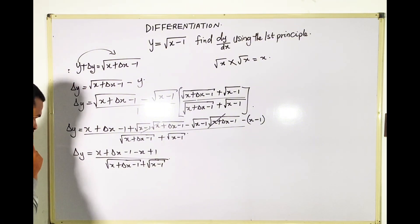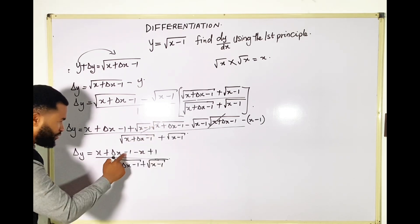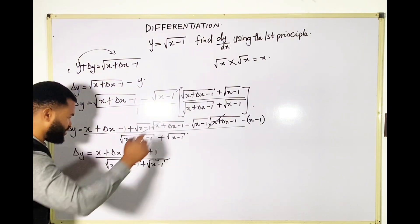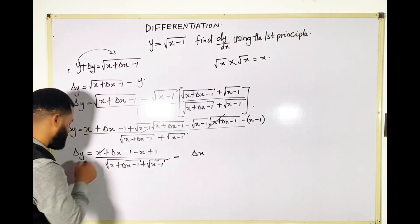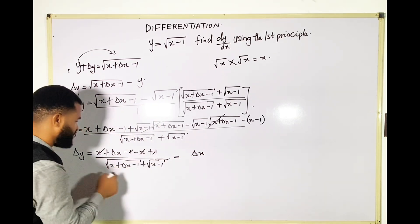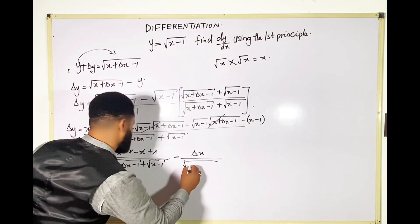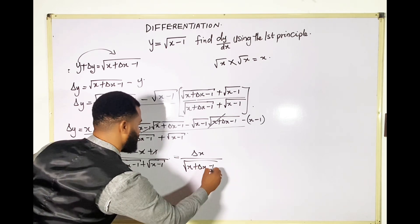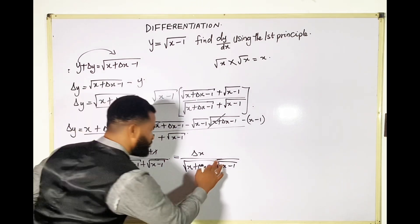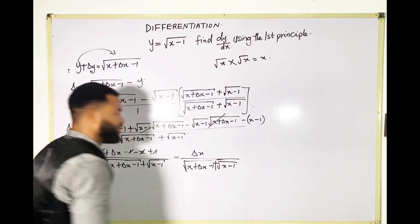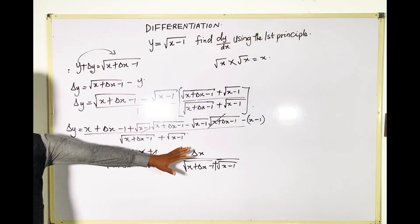The next thing I'm going to do is clear everything here: x minus x is zero, minus 1 plus 1 is zero. So everything simplifies, and what is left in the numerator is just Δx. So I have Δy equals Δx all over root (x + Δx − 1) plus root (x − 1). Remember, it's plus — if you don't put that plus you will be making a mistake.